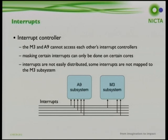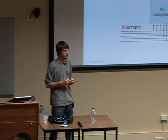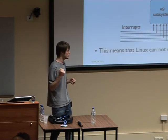In SMP systems, Linux expects all CPUs to be able to access available hardware, but A9s and M3s can't access each other's interrupt controllers. The M3 can't mask interrupts mapped to the A9 and must request the A9 to do so. Additionally, not all interrupts - such as the serial port - are mapped to the M3 subsystem, meaning we can't run Linux completely on the M3 as we would have liked.